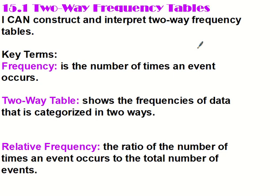So the key terms are frequency — this is just how often something happens, the number of times an event occurs. A two-way table shows the frequencies of data that is categorized in two ways. It's called a two-way table because it takes data and splits it, showing how it's categorized in two different ways.